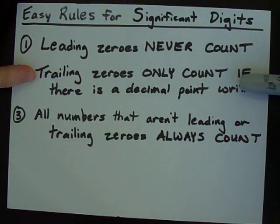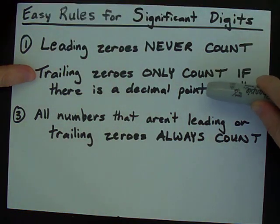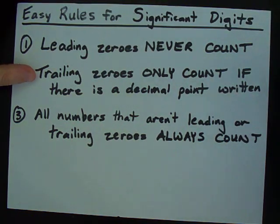Number two, trailing zeros only count if there's a decimal point written somewhere in the number.